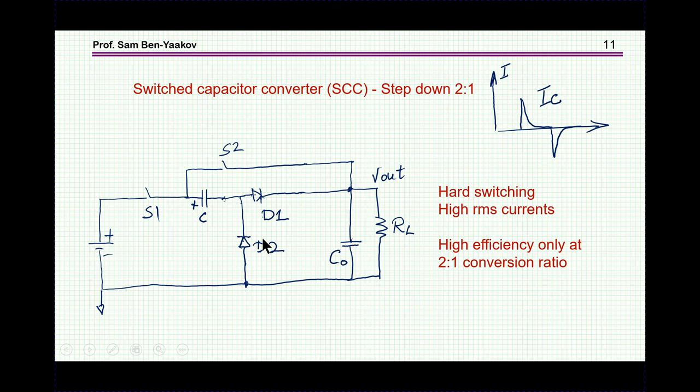Now, this topology suffers from high losses due to two reasons. One, the currents are very peaky, depending on the relationship between the RC time constant and the frequency, you'll get the shape of this current, and it'll be typically very peaky, and therefore the RMS is very high, and therefore the conduction losses will be very high. Also, you have hard switching, because as you turn on, say S1, current is starting to flow, so there are switching losses, conduction losses due to the high RMS, so therefore this is usually a low efficiency converter.